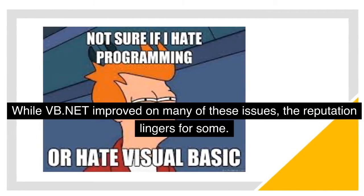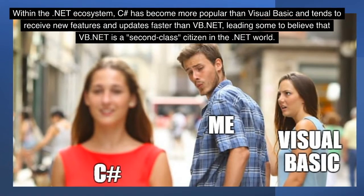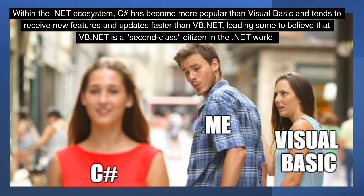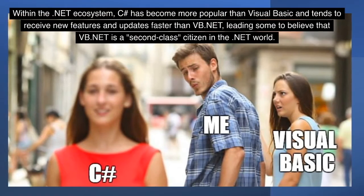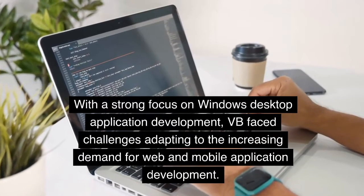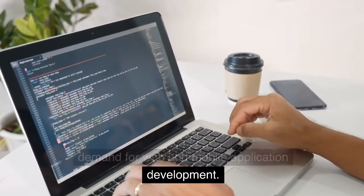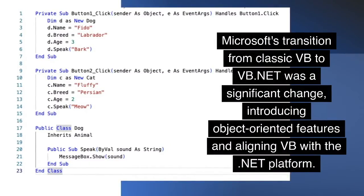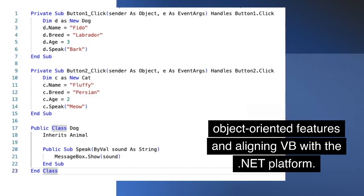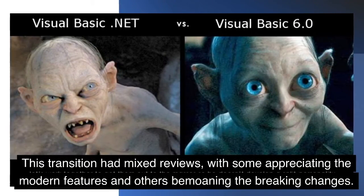Within the .NET ecosystem, C# has become more popular than Visual Basic and tends to receive new features and updates faster than VB.NET, leading some to believe that VB.NET is a second-class citizen in the .NET world. With a strong focus on Windows desktop application development, VB faced challenges adapting to the increasing demand for web and mobile application development. Microsoft's transition from classic VB to VB.NET introduced object-oriented features and had mixed reviews, with some appreciating the modern features and others bemoaning the breaking changes.